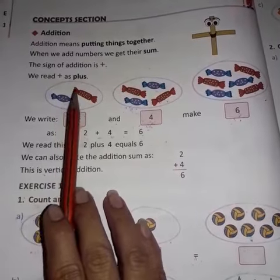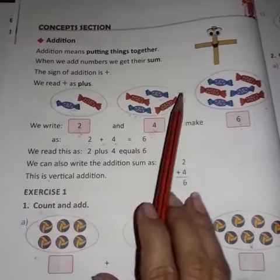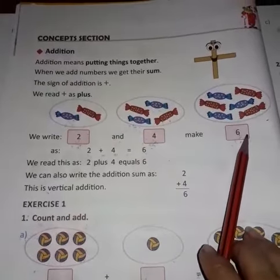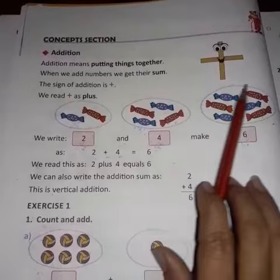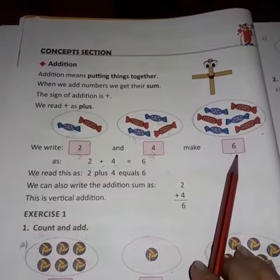Now, one, two, three, four, five, six. There are six toffees. All together, there are six toffees. So you have to write six in this box, okay?